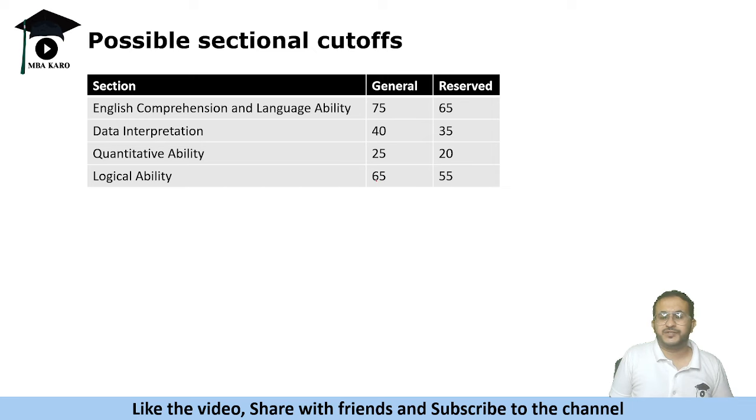Logical ability 65 is fine. Students have scored easily in this section. It was easy - coding, decoding, series, all were easy questions. People have scored well and the time was sufficient. But in quant and DI the paper was very difficult. So if they put sectional cutoff to filter out some students, I don't think the cutoff should be more than these numbers.